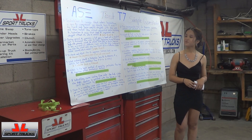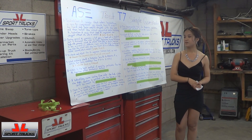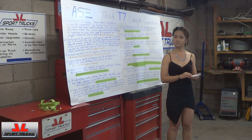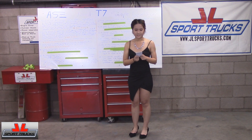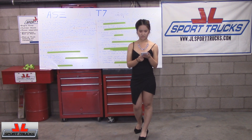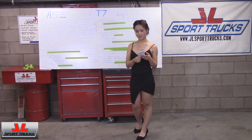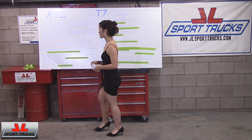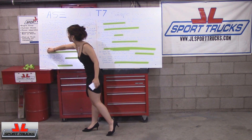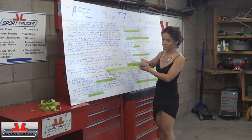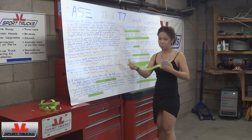Question five: Which is the best method of removing particulate from the AC system after a chemical failure? Options: A) nitrogen flushing; B) an AC flushing solvent in reverse flow; C) R11 flushing; or D) an in-line filter. The answer is B — AC flushing solvent in reverse flow.